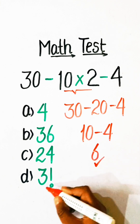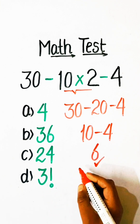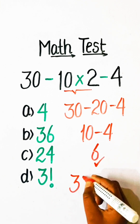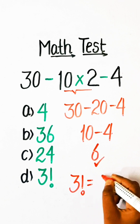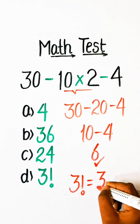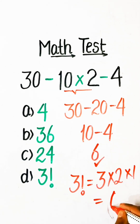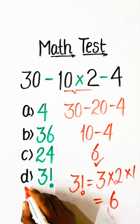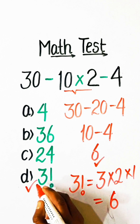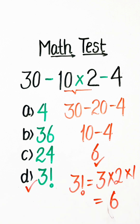So 6 will be our answer. The value of 3 factorial is 3 multiplied by 2 multiplied by 1, which equals 6. So Option D, 3 factorial, will be our correct answer. If you like my video, please like, share, and subscribe to the channel.